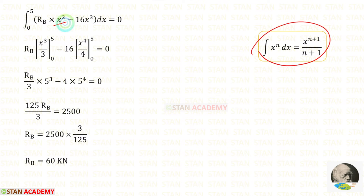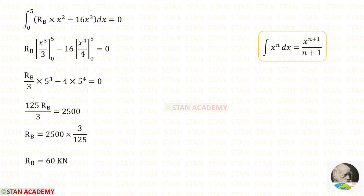Using the integration formula: integrating X squared gives X cubed upon 3, and integrating X cubed gives X to the power 4 upon 4. Now applying the limits — no need to apply the lower limit 0, only the upper limit. Finally for RB we get 60 kN.